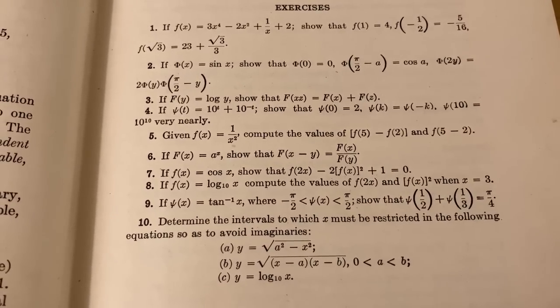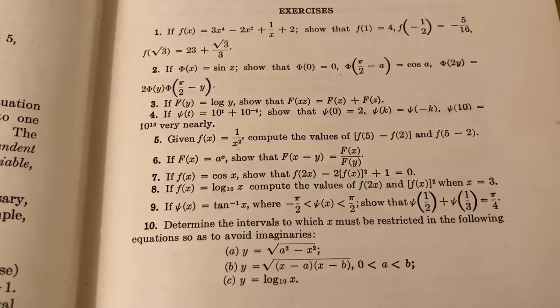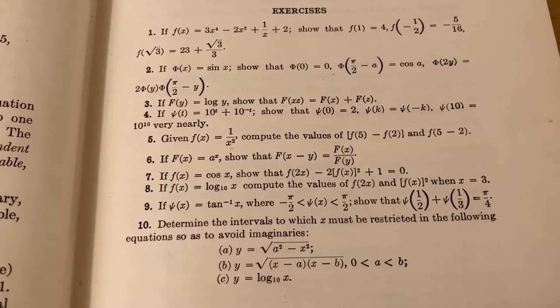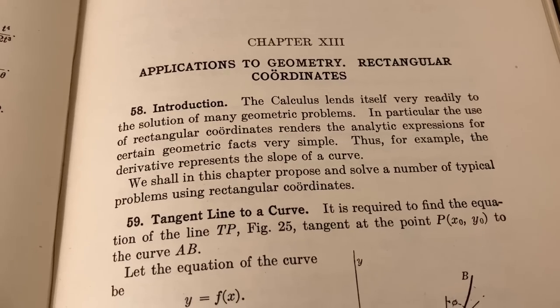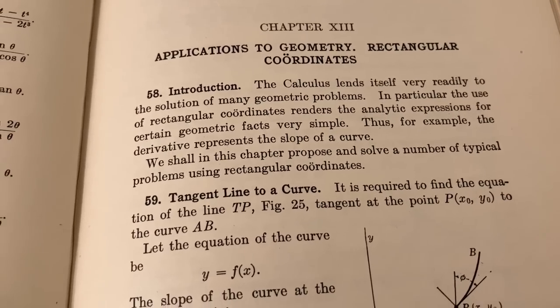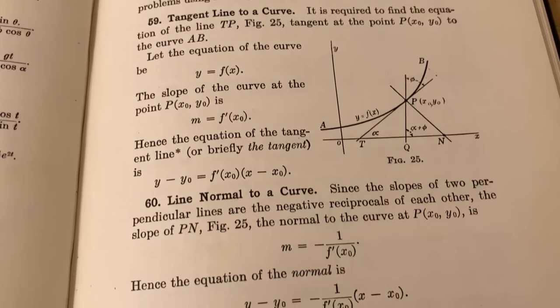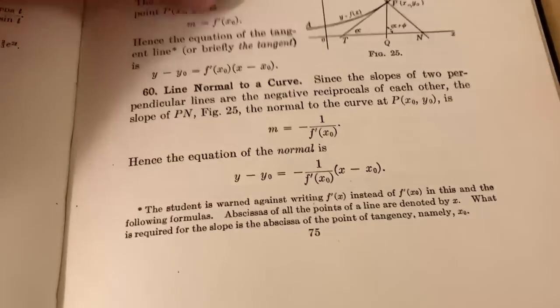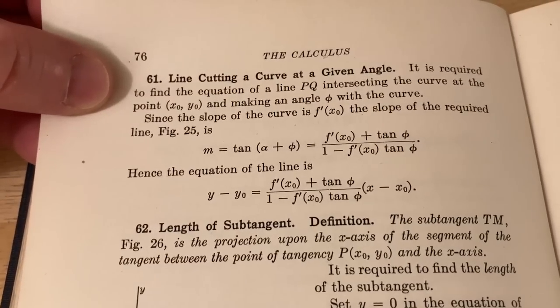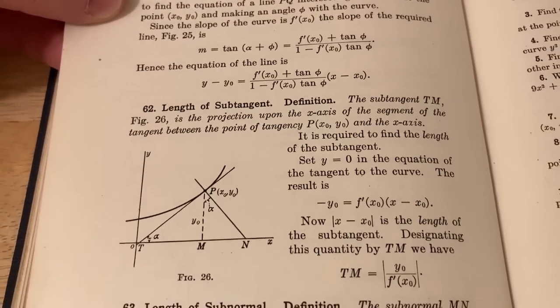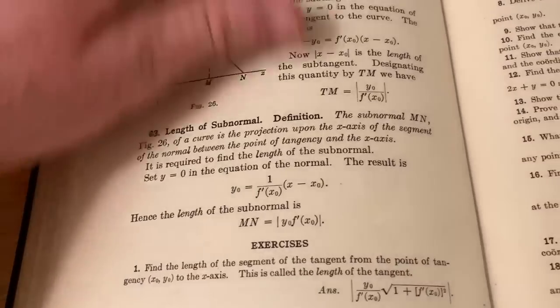Nevertheless, I do think this is a great book to read and work through because you're going to get something out of it. It's definitely written in a different fashion than modern books are. Chapter 13 is on applications to geometry rectangular coordinates. And you can see here it talks about the tangent line to a curve. It's got a little derivation. The line normal to a curve. The line cutting a curve at a given angle. The length of a sub tangent. And the length of a sub normal. And that's it. That's the whole section.